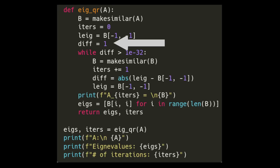And so this diff variable here is just going to be to keep track of the differences between the last eigenvalue from one iteration to the next. And so we're going to keep on generating more and more similar matrices until the difference between that last eigenvalue from one iteration to the next is less than an order of one times 10 to the minus 32, or an order of 10 to the minus 32, simply because that's the level of precision that I've just chosen here.